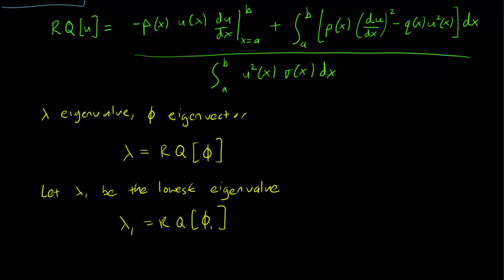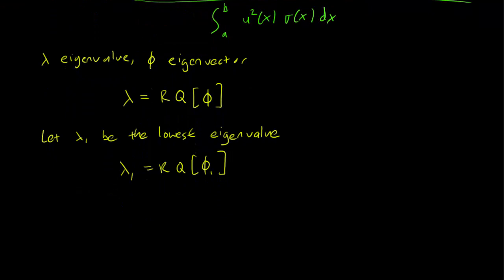But what the minimization principle does is that it gives us a way to estimate the lowest eigenvalue, even when we don't know exactly what the corresponding eigenfunction is. And this says that lambda 1 is actually the minimum for all functions u of the Rayleigh quotient on u.